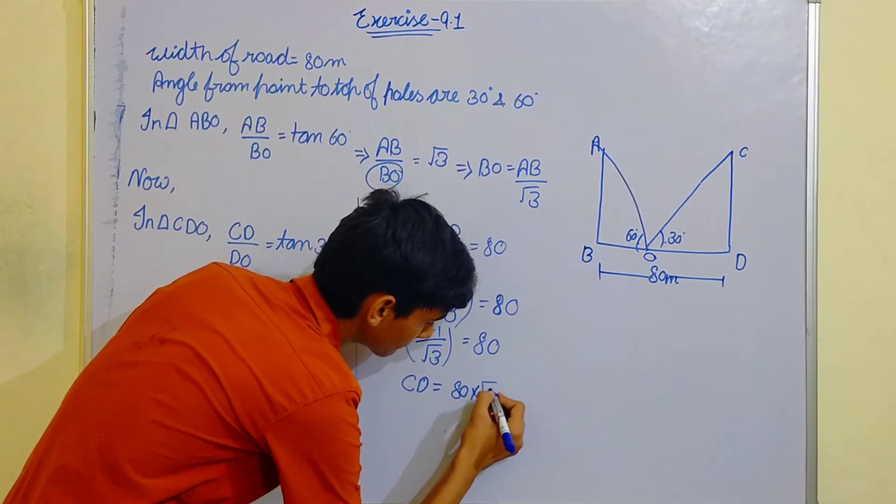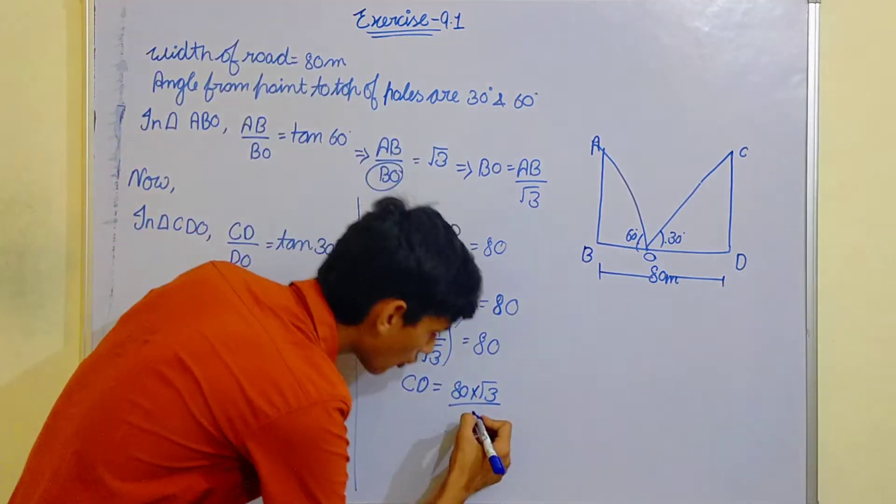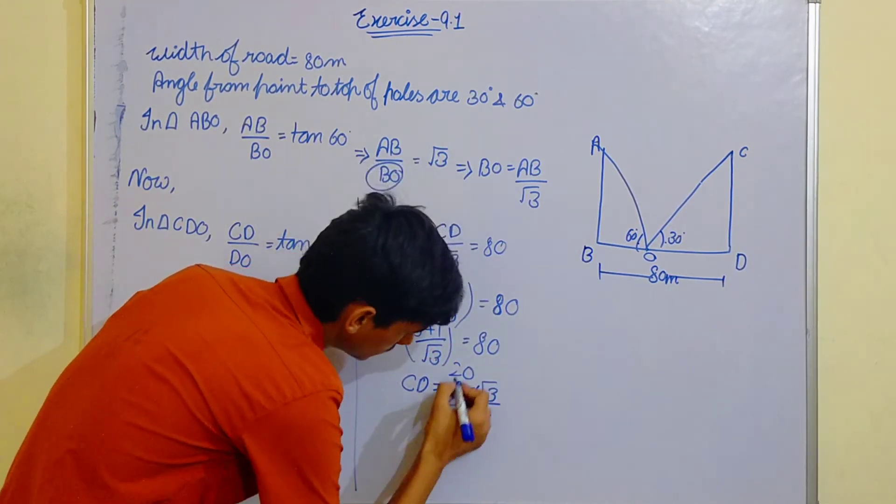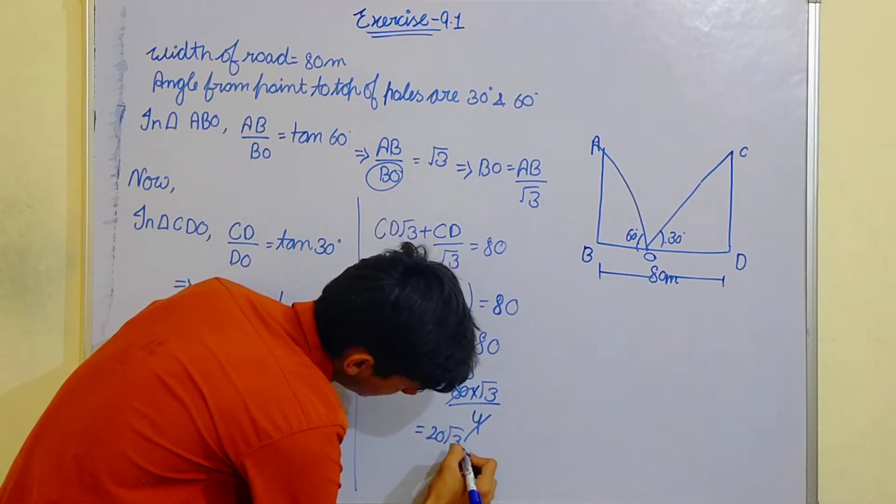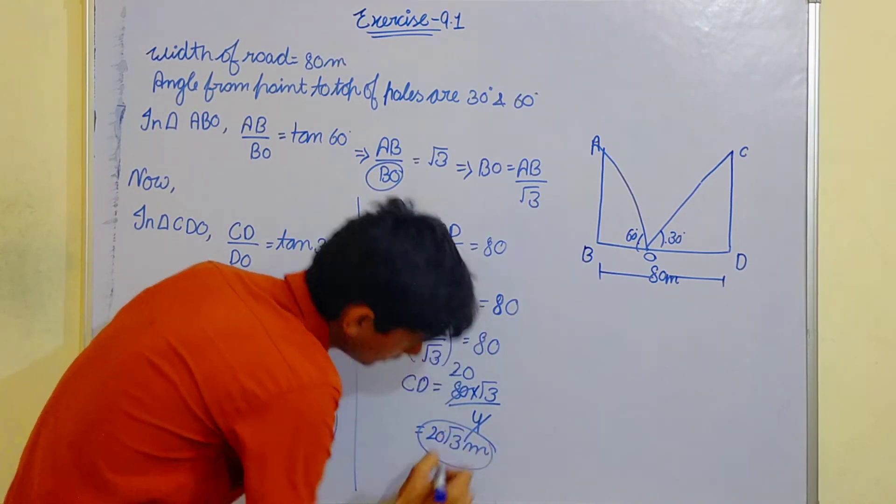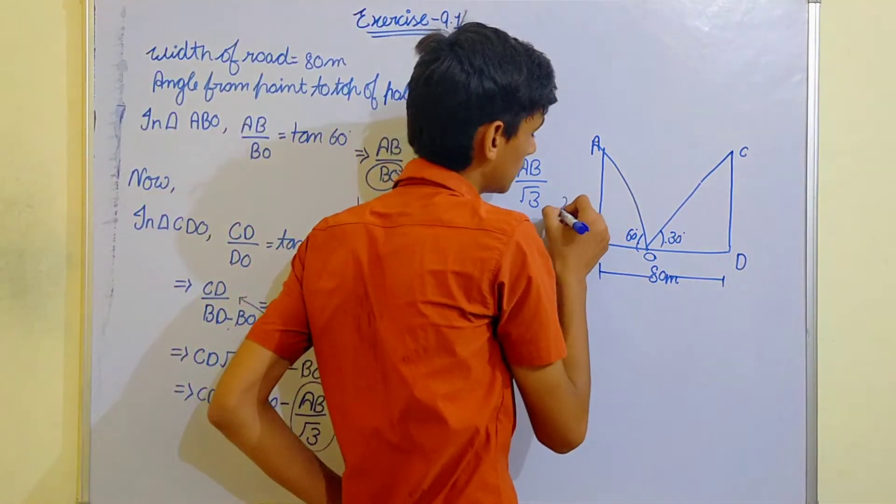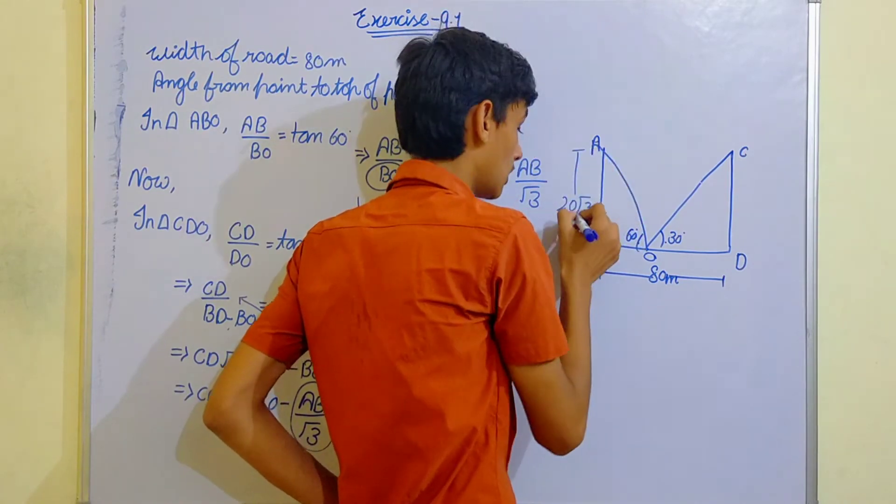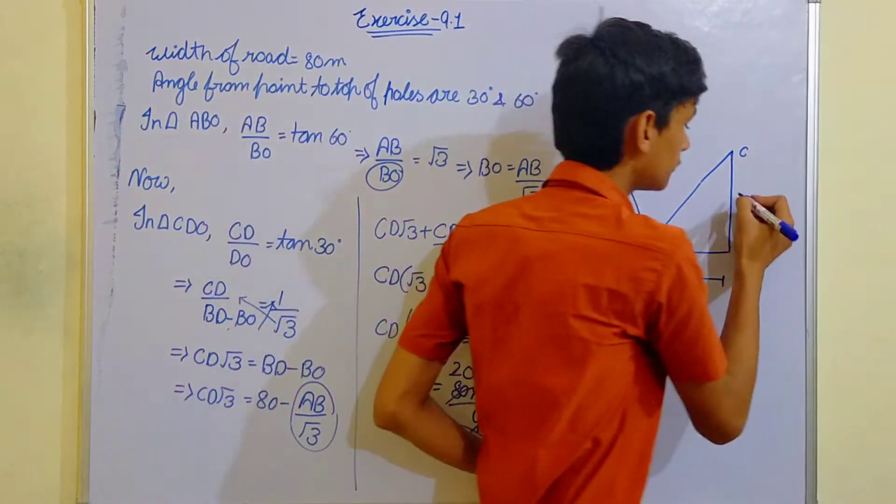divided by 3 plus 1 which is 4. Cancel, becomes 20. CD is equals to 20 root 3 meter. So the height is 20 root 3 meter. AB is also 20 root 3.